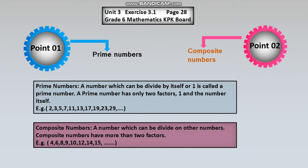Ab composite numbers ki taraf chalte hain. Composite numbers: a number which can be divided by other numbers. Composite numbers have more than two factors. Wo number jo doosre numbers par divide hota hai, apne aap aur one ke alawa, aur jin ke factors ek se zyada hon.